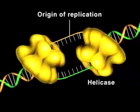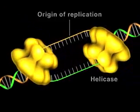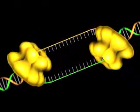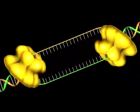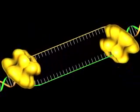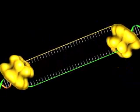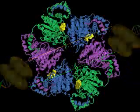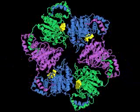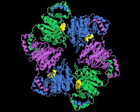Helicases separate nucleic acid duplexes into their component strands using energy from ATP hydrolysis. The crystal structure of this DNA helicase from bacteriophage T7 reveals a hexagonal arrangement of six identical subunits.